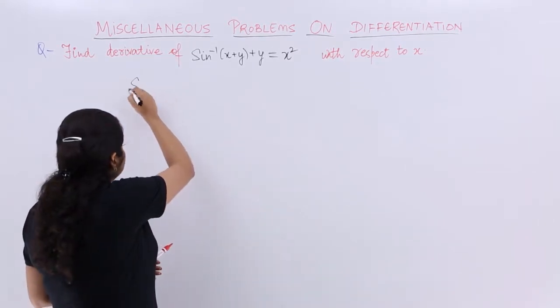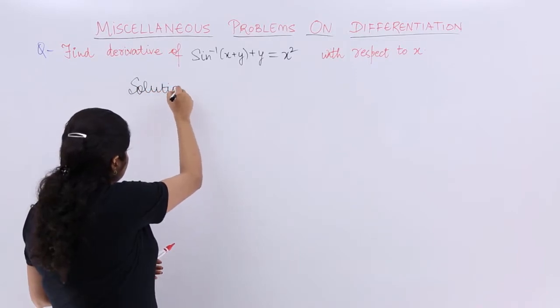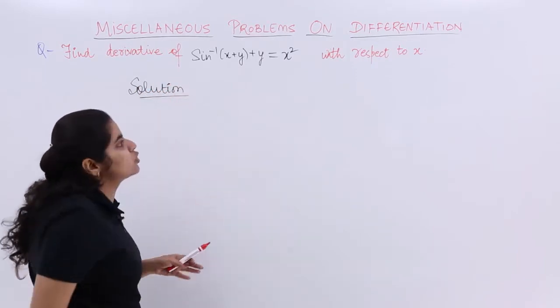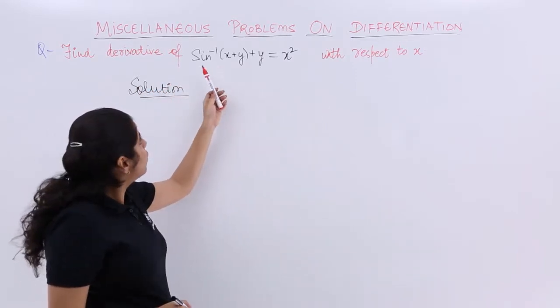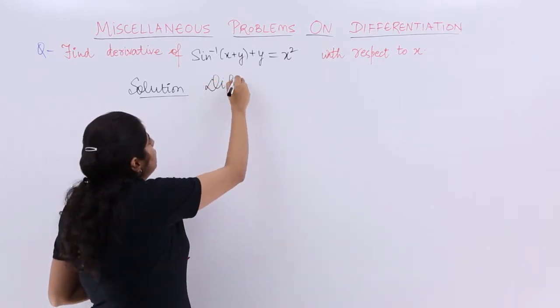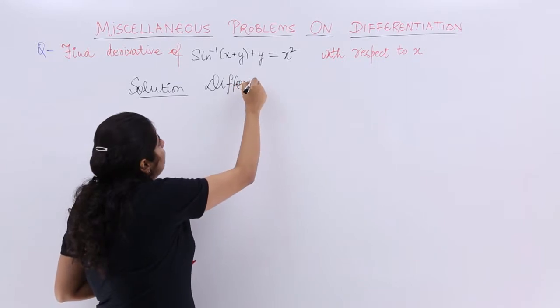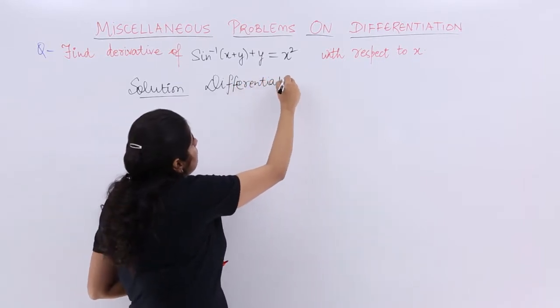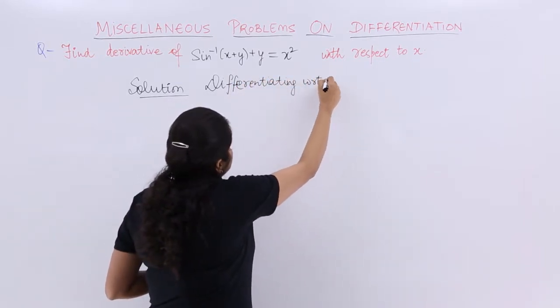Let's start with the solution. The differentiation has to be done with respect to x. The question is sin inverse (x+y). Let's start differentiating. So I write differentiating with respect to x.